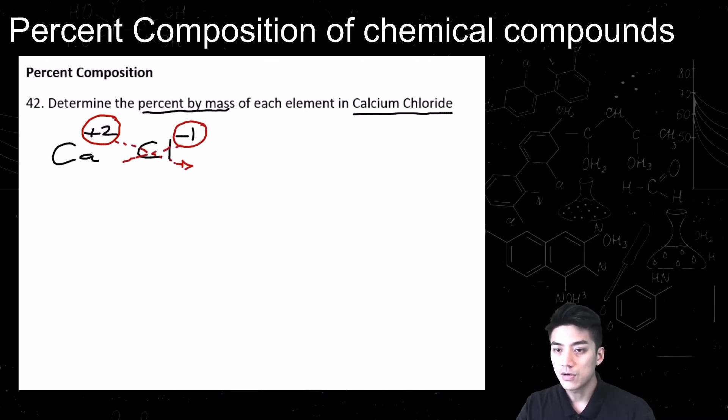Crisscross the charges, just like how we learned in the chapter 8 playlist. Cross the 2 over, cross the 1 down. Write down what you see. So it's CaCl2, which is the formula for calcium chloride.